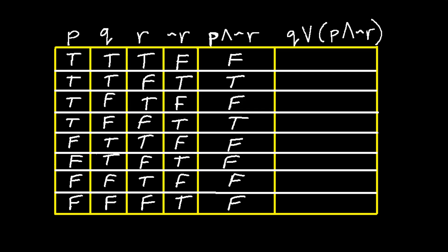Next we will finalize the problem by completing the last column: q or (p and not r). Keep in mind this is a disjunction, an or statement — only one of the two parts must be true for the entire statement to be true. We will be comparing the two columns q and (p and not r). The first line is true or false, which is true. The next line is true or true, which is true. Next we have false or false, so this is false. False or true is true. True or false is true. True or false is true.